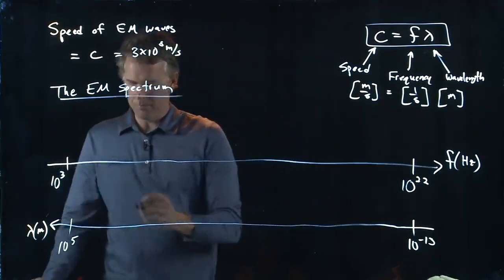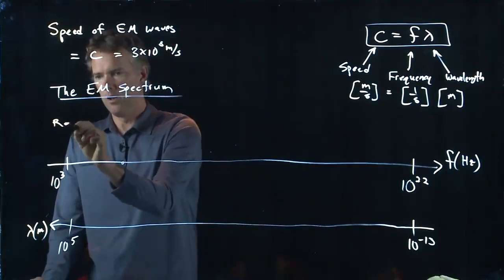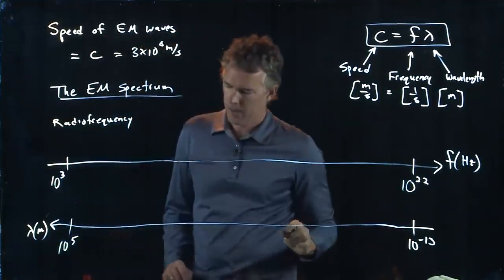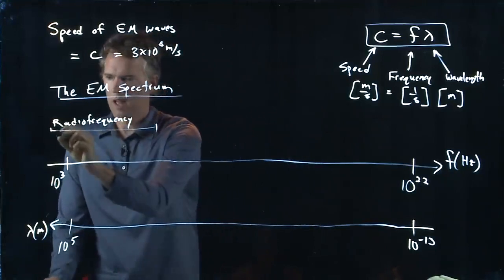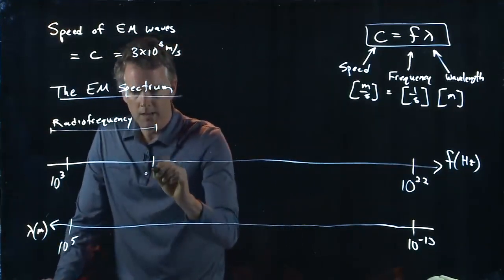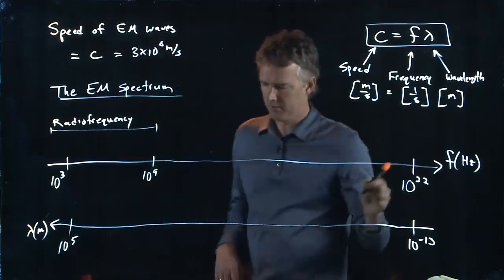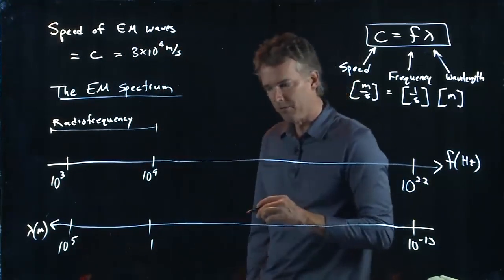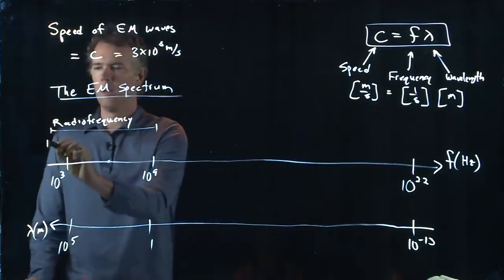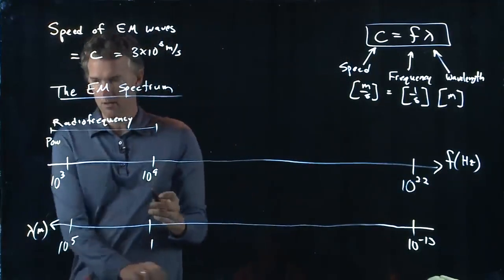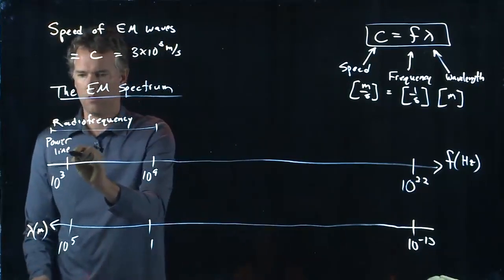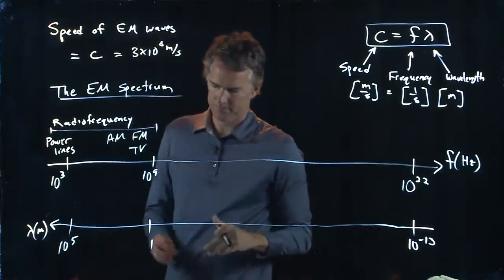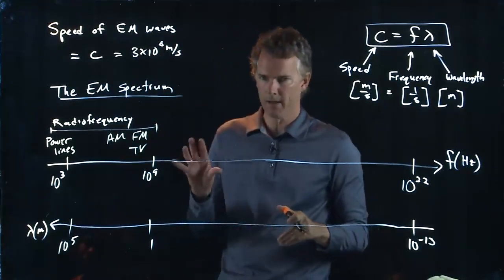Down here at the low end of the spectrum, we have what is called the radio frequency. The radio frequency extends up to about 10 to the 9 in hertz, or roughly 1 in meters. Radio frequencies contain power lines way down here at the bottom end, AM radio, FM radio, and television. These are all operating in the radio frequency.